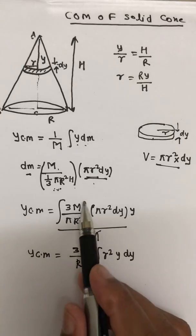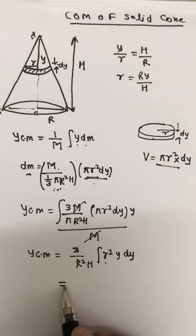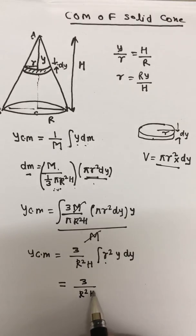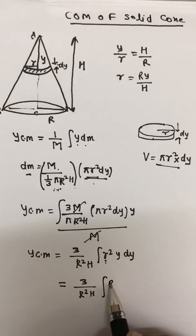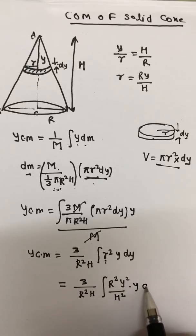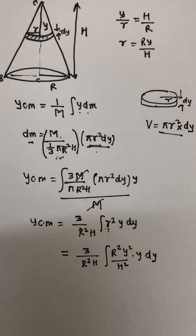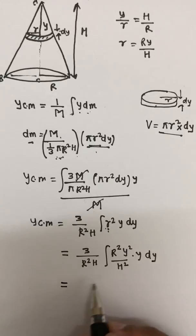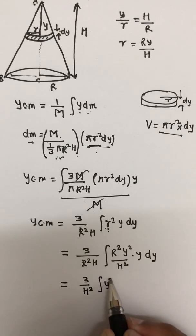In place of r, I can write RY divided by H. So substituting, I get 3 divided by R² H, with r² replaced by R²Y²/H², giving 3 divided by H³ times integration of y³ dy.